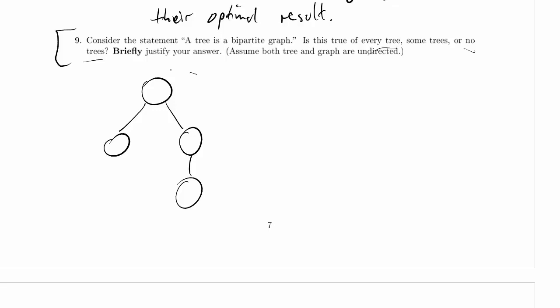So here's a tree. Is this a bipartite graph? Well, sure. How do we show it's a bipartite graph? We need to identify the nodes somehow. So I'm just going to number them: 0, 1, 2, 3.